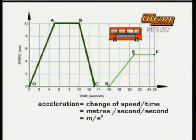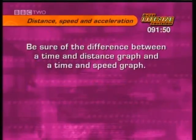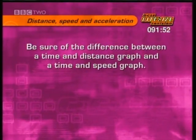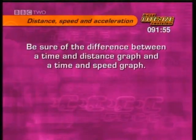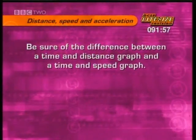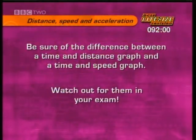A downward sloping line means the bus is slowing down — it's decelerating. The horizontal section from C to D is where the speed of the bus is not only not changing but it's come to a stop. Then off it goes again. It's important to be sure of the difference between a time-distance and a time-speed graph and what they're telling you. Watch out for them in your exam.